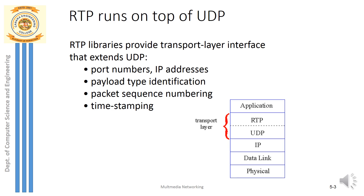Port addresses and IP addresses are required to identify source and destination. The payload here is the audio chunks embedded inside RTP. The payload type field indicates the type of encoding used — for audio it can be PCM encoding, and for video it can be JPEG or MPEG encoding technique. The type of encoding made is specified in this payload type identification.